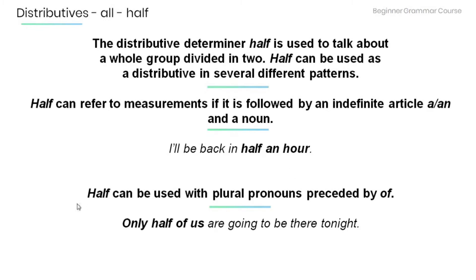Second, 'half' can be used with plural pronouns preceded by 'of.' For example: 'Only half of us are going to be there tonight,' meaning that if we are ten, only five of us are going to be there tonight.